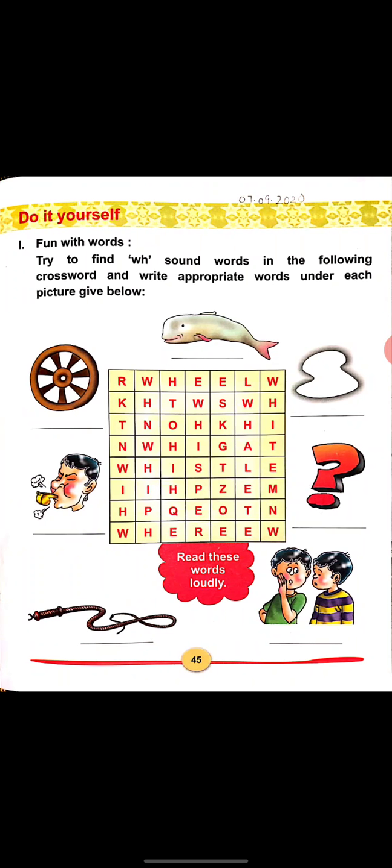Let's start. First picture, this is wheel. First line W-H-E-E-L, wheel. First circle and then write it down. Next, this is the first word, whistle. This is the first word, word. Circle and write it down. Third one, this is called whip.